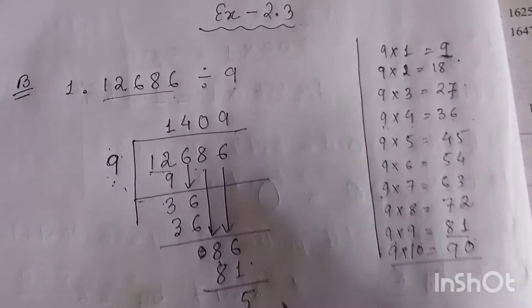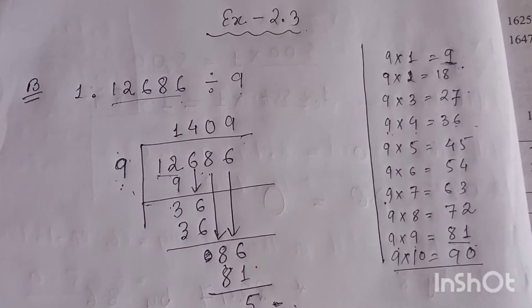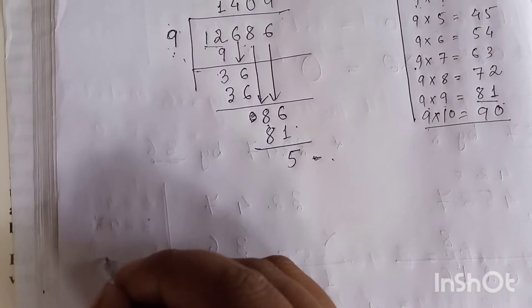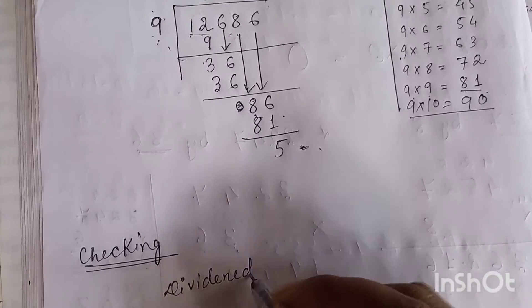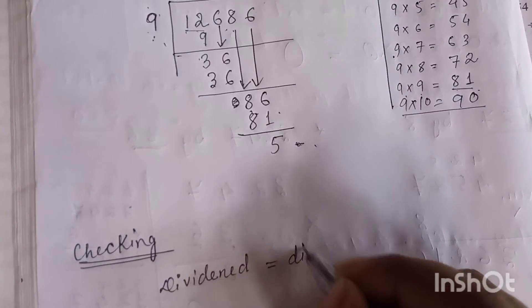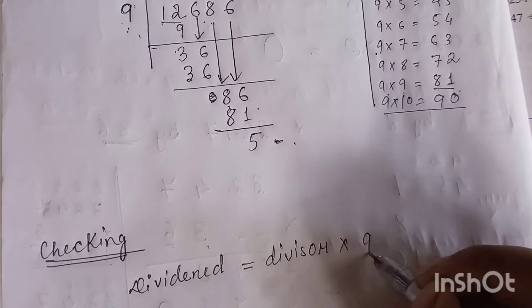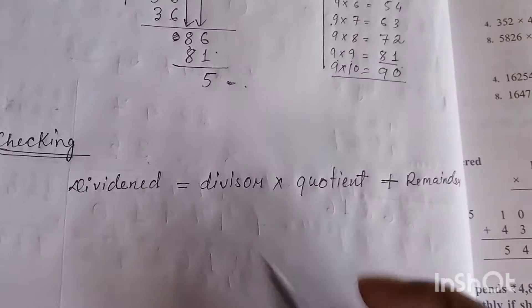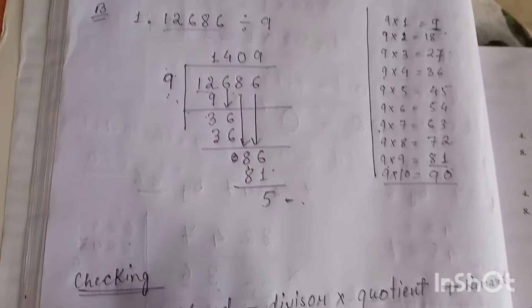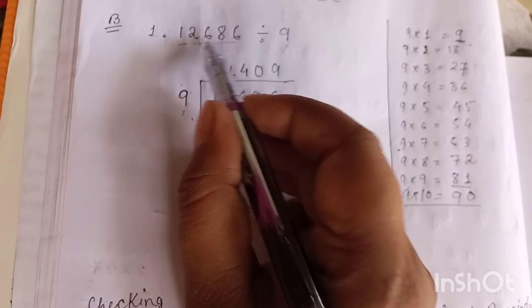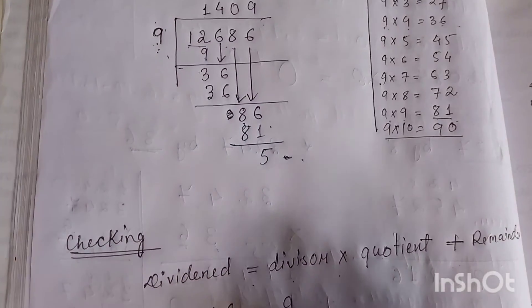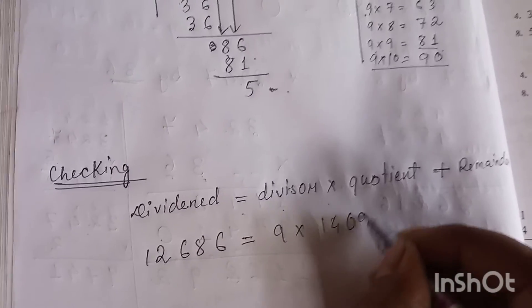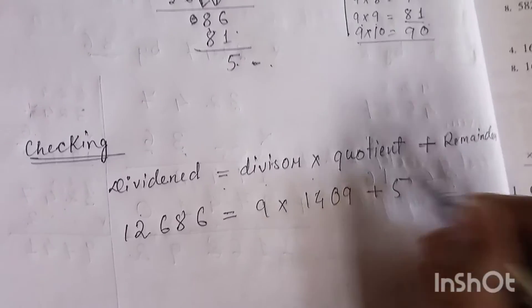Now we have to check the answer. Remember the checking formula: dividend equals divisor times quotient plus remainder. Here the dividend is 12,686, the divisor is 9, the quotient is 1,409, and the remainder is 5.